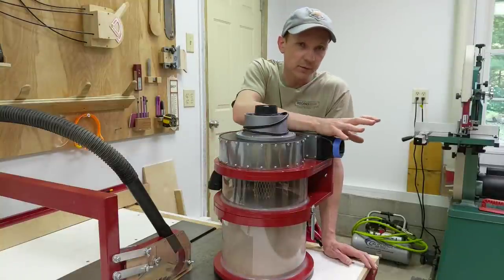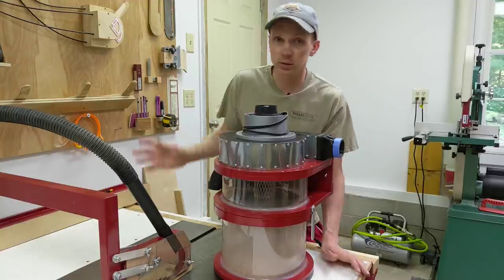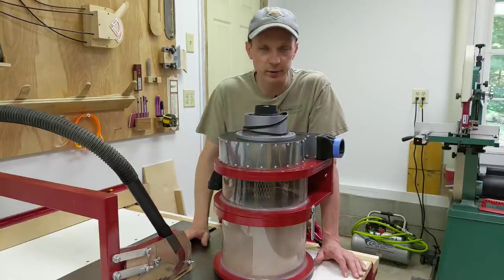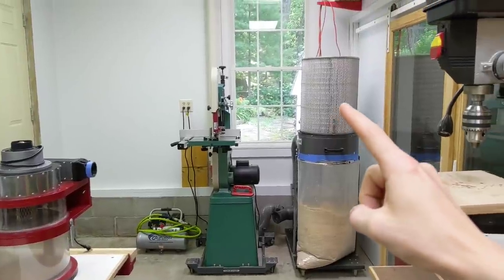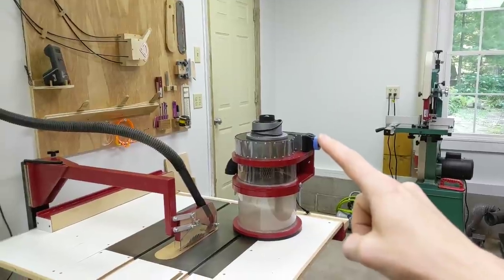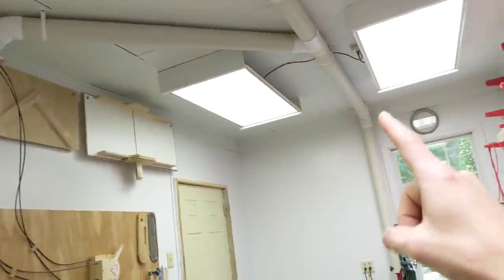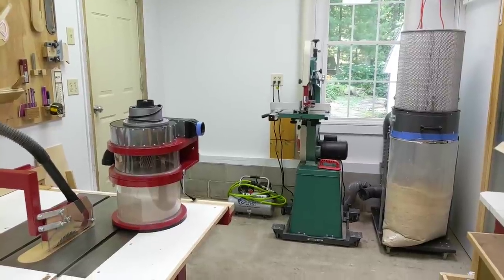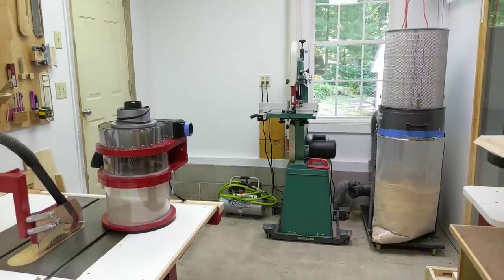Now I could have just added a filter box to the exhaust of this cyclone and then mounted it to the wall and I would have a pretty sweet dust collector for the overarm. But then I got to thinking, I've already got a pretty nice filter on my main dust collector. Could I just hook the exhaust from my mini cyclone right into the dust collection line of my main dust collector and have it suck out the fine dust? Then I wouldn't have to deal with a separate filter box for this unit and my main one could do all the work.